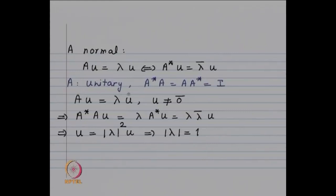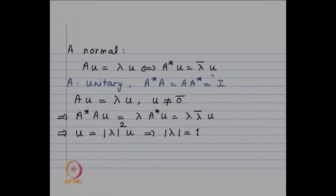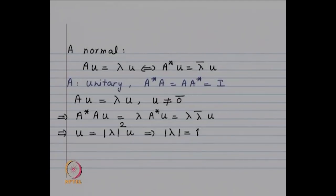For a unitary matrix, A*A equals AA* equals identity, so a unitary matrix is in particular a normal matrix. If Au equals lambda u, applying A* gives A*Au equals lambda times A*u, and since A*u equals lambda-bar u, we get u equals |lambda|^2 u. Since u is a non-zero vector, this implies |lambda| equals 1. Thus for a unitary matrix, all eigenvalues lie on the unit circle.